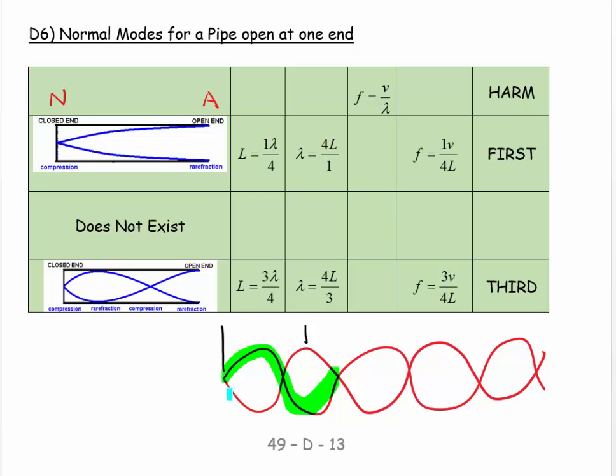And my next allowed state is the next antinode. Okay, that's not a whole wavelength, that's three quarters of a wavelength.